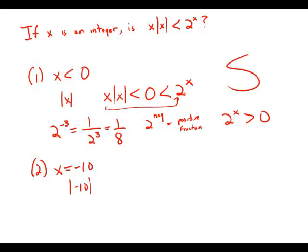Absolute value of negative 10 is just 10. So x times absolute value of x is negative 100.